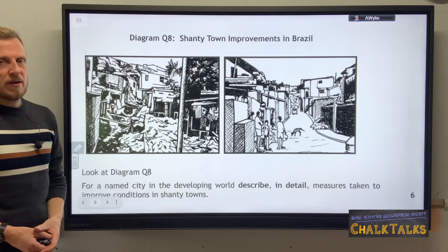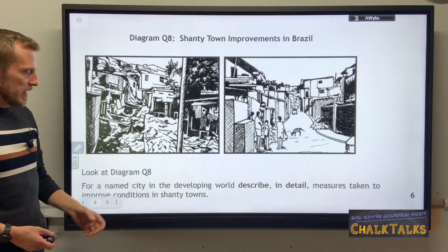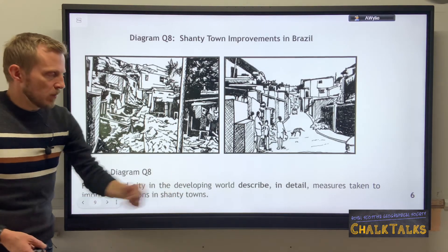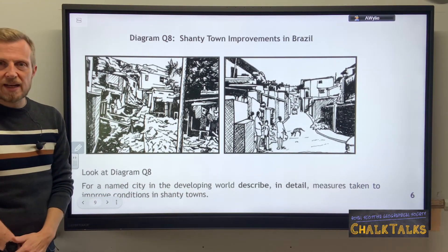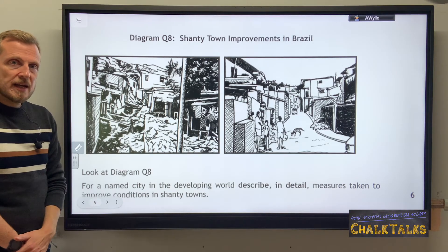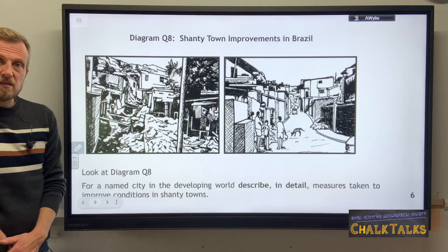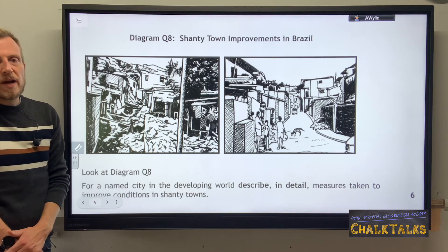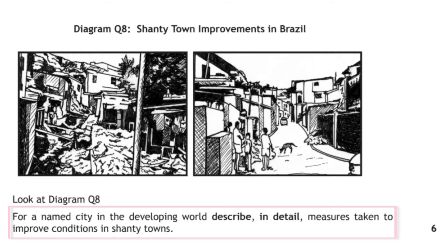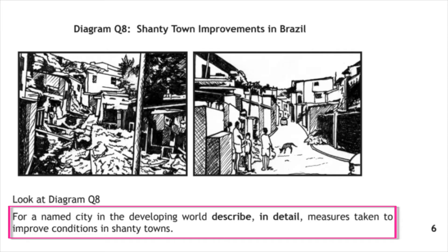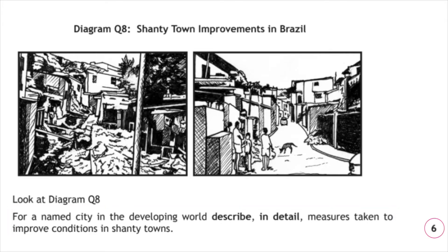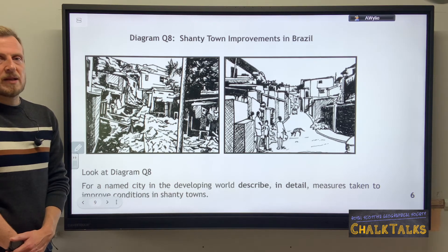In this final past paper exam question the focus switches from a developed world city to a developing world city, so your answer must refer directly to a developing world city you've studied — such as Rio de Janeiro in Brazil or Mumbai in India. The question asks you to describe in detail measures taken to improve conditions, so you need to identify six different measures that help improve the lives of people living in shanty towns. It is a six-mark question.